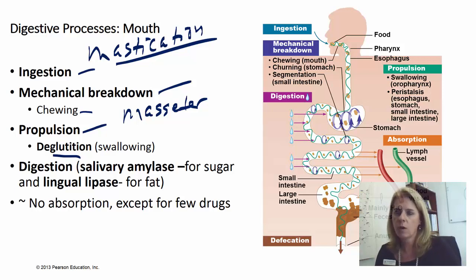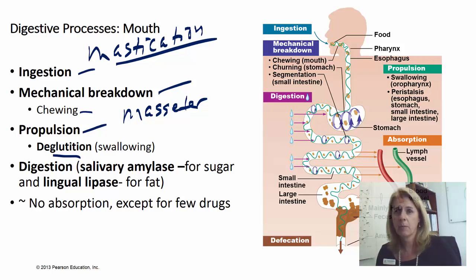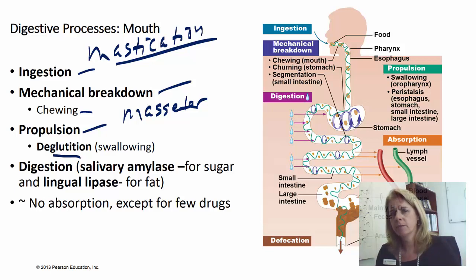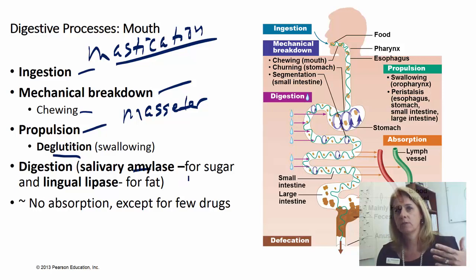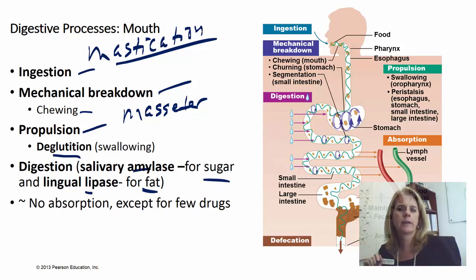Deglutition is swallowing. There's also actual digestion — remember digestion is just dissolving — so there's chemical breakdown inside the mouth, and that's occurring with saliva, or spit. Saliva has some enzymes: salivary amylase, which tells you it's for sugar, and lingual lipase, which gives you a hint that it's for fat. So you're starting your initial breakdown of sugars and fats inside your mouth.